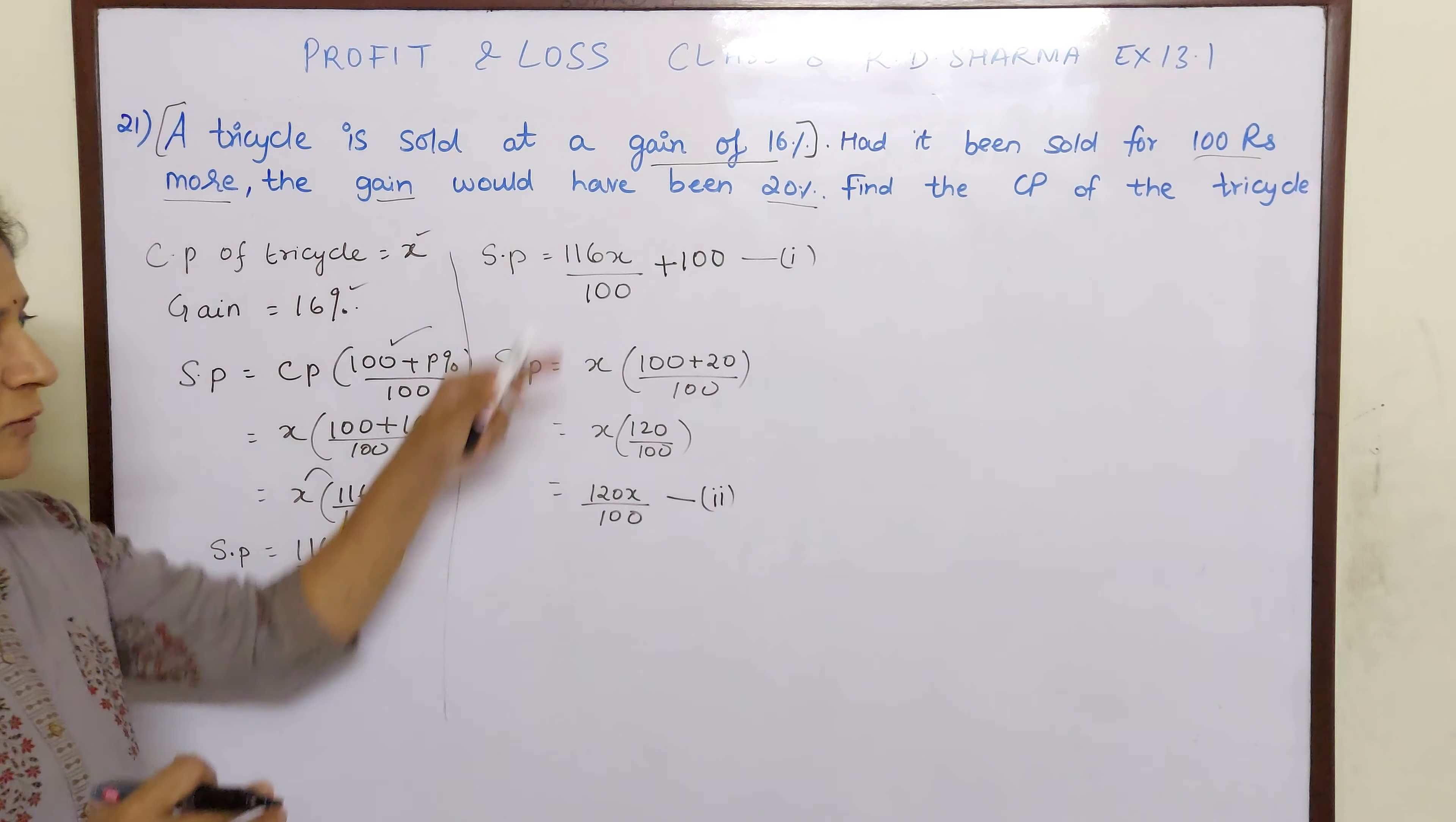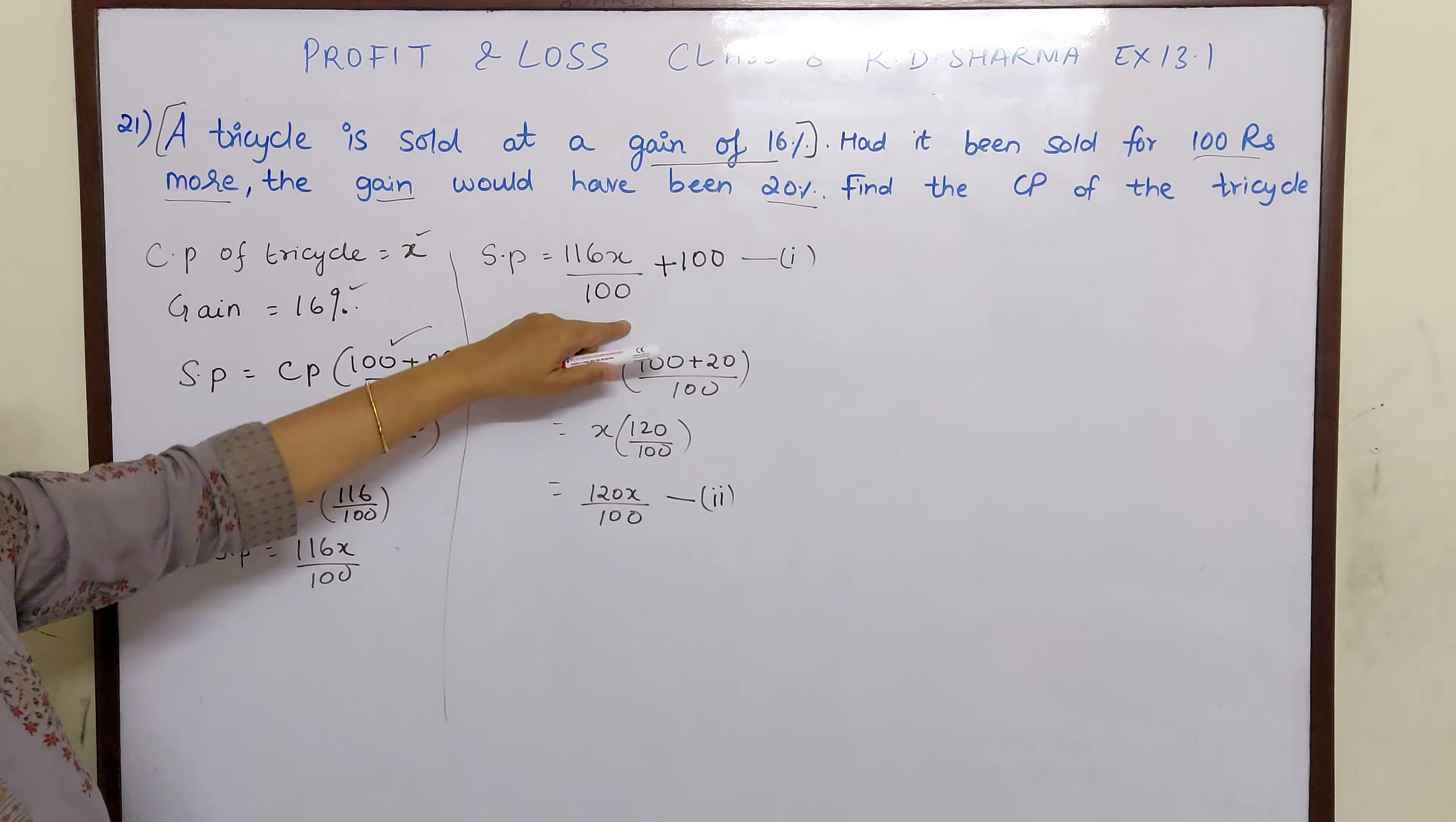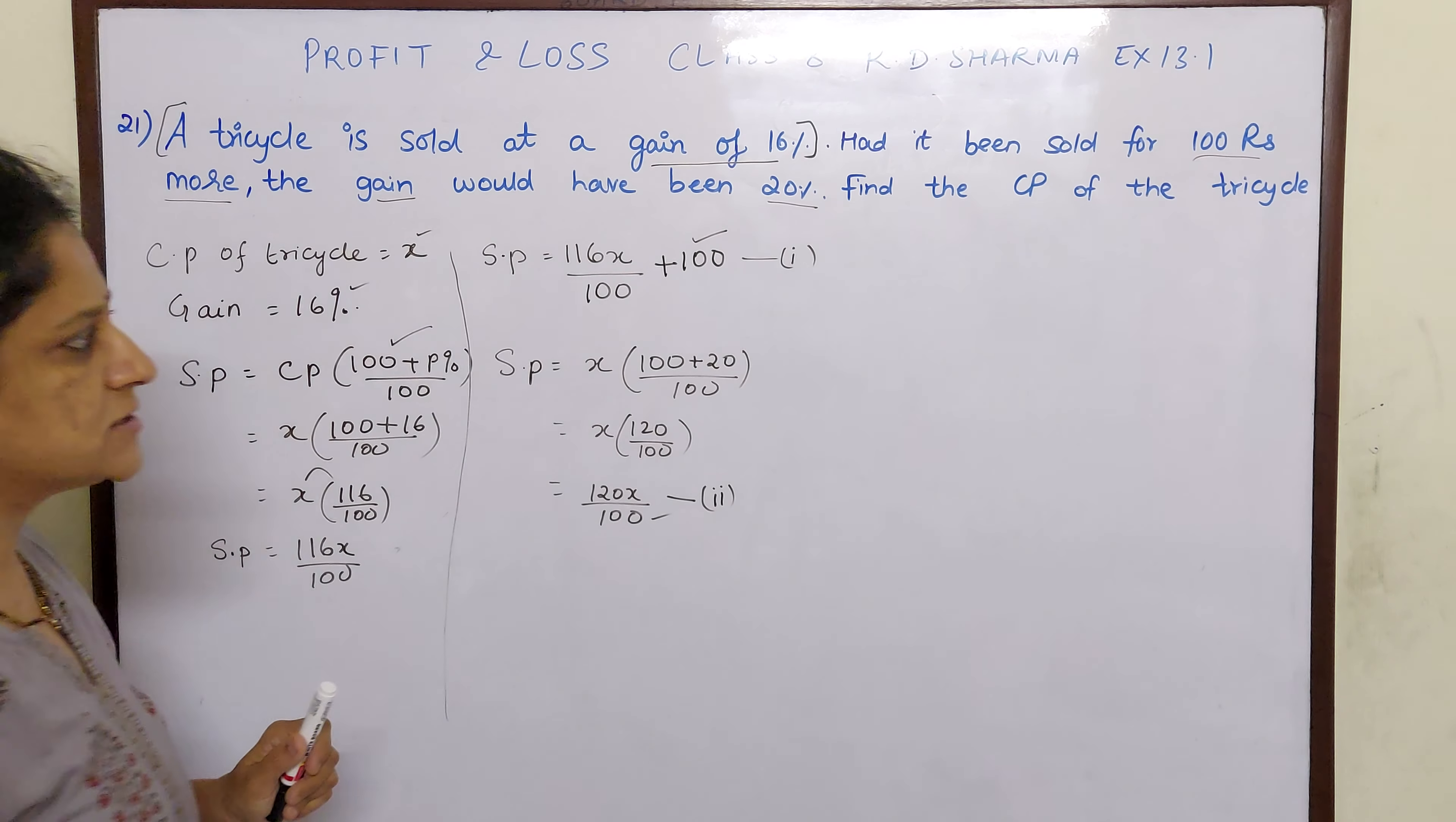So this is our second equation. So we are going through the sum according to the sentence. That means had it been sold for 100 rupees more, the gain would have been 20%. So if this was the case, this will be the selling price.